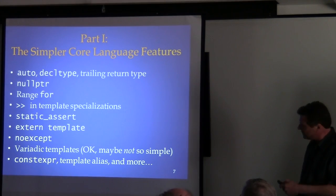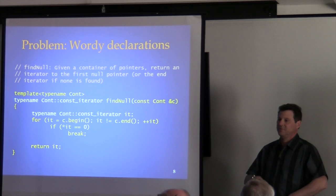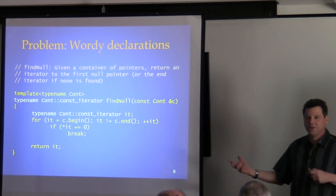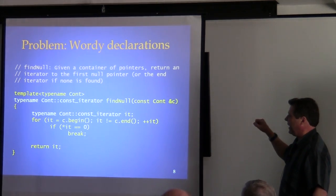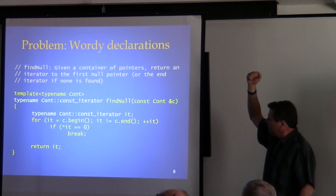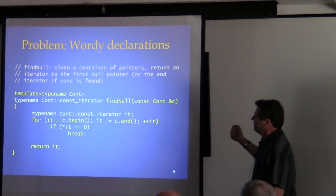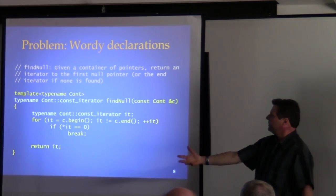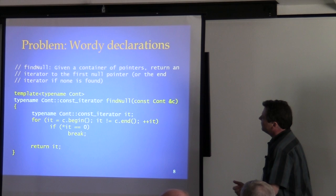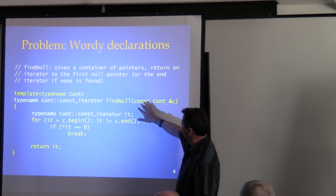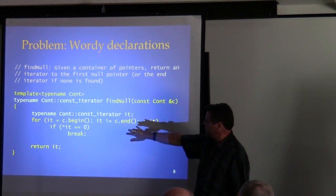The approach I try to use here is to show old C++98 code, what's wrong with it, and then show how C++11 and 14 improve upon it. So we'll start with a pure old C++ function — a function template that takes a reference to a container and searches it for the first null pointer, returning an iterator to that null or the end iterator. Things are really wordy right away: you need `typename Container::const_iterator it` just to declare the iterator variable.